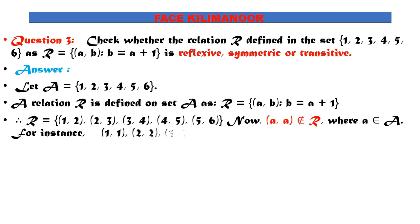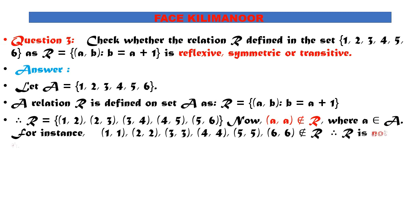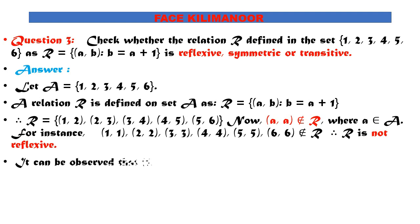To check symmetricity: for a relation to be symmetric, if a is related to b then b must be related to a. But (1,2) belongs to R, while (2,1) does not belong to R. Therefore we can say that the relation is not symmetric.